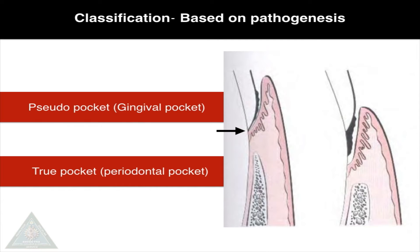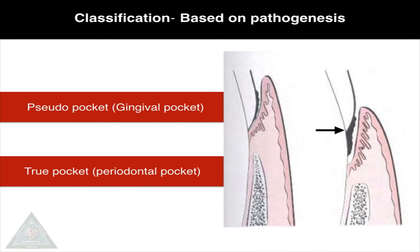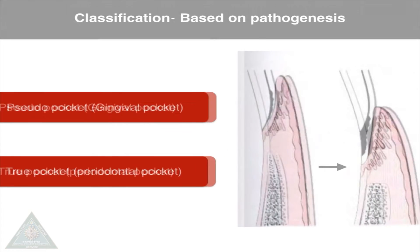Pockets are classified in many ways. Based on pathogenesis, they are classified as a pseudopocket or gingival pocket, and a true pocket or periodontal pocket. A pseudopocket is due to enlargement of the gingiva, whereas a true pocket is due to periodontal destruction or apical migration of junctional epithelium.